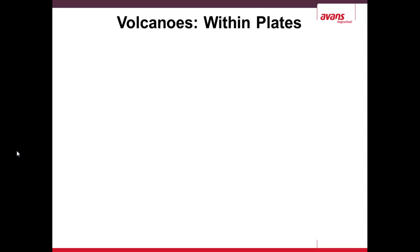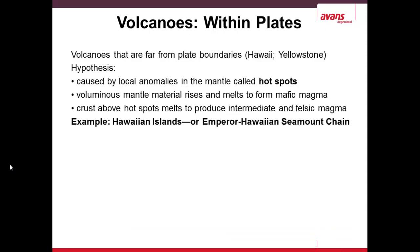Volcanoes can also happen within plates — approximately 10% of volcanoes form this way. Good examples are Hawaii and Yellowstone. These are caused by anomalies in the mantle called hot spots, which are very hot parts of the mantle. Remember, the crust and tectonic plates are floating on the mantle. This material rises and melts to form mafic magma at these hot spots. The crust above also melts, which produces intermediate and felsic, iron-rich magma.